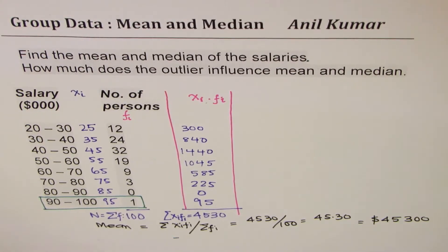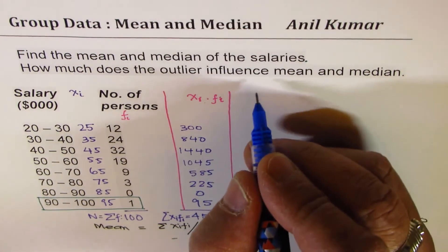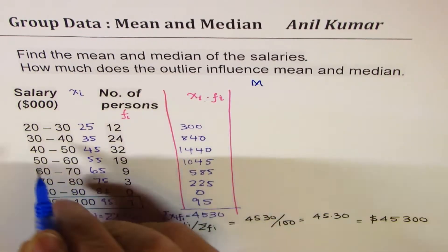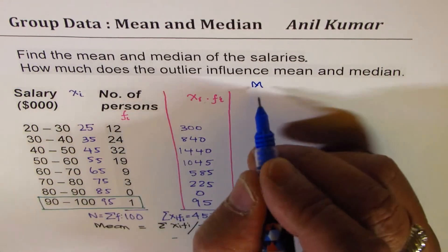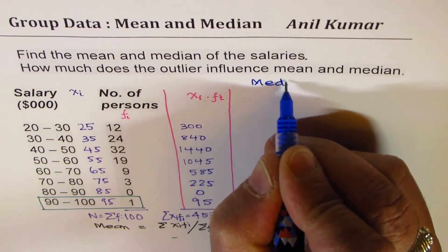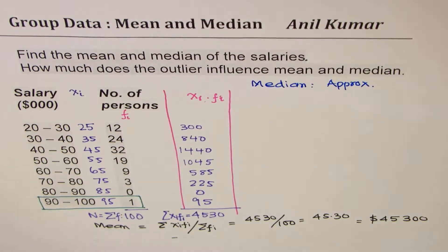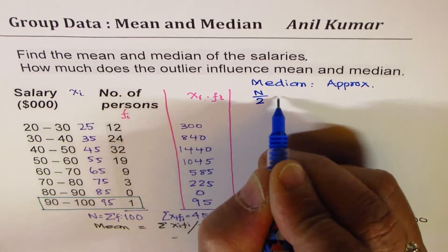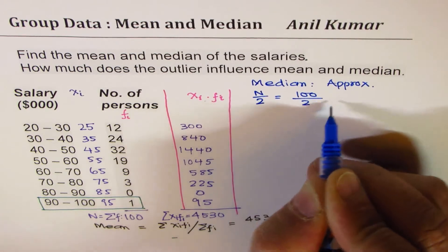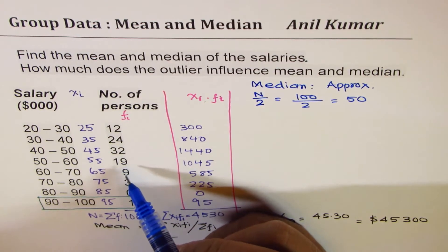Now let's calculate median. Median is the center value when you arrange them in particular order. Whenever you are given grouped data, we really don't know where these elements are. So to find median, we are always approximating. Let's understand that part first. And it has to be at N by 2. N is 100 for us. N by 2 is 50. So we have to look for the 50th person when arranged in ascending order.